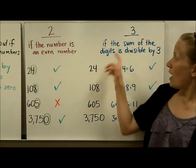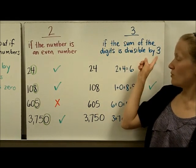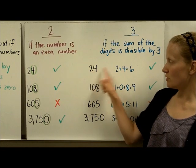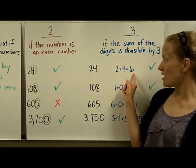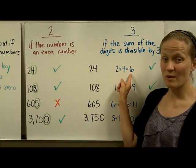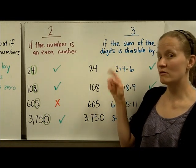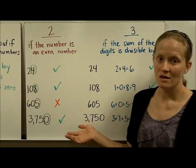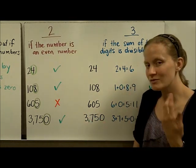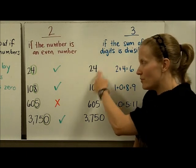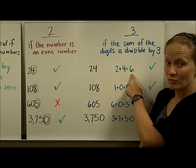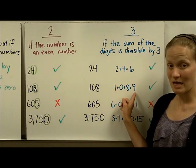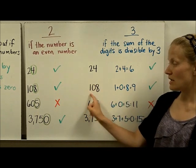3 is a little trickier. If the sum of the digits is divisible by 3, then the whole number is divisible by 3. You take the number and add the digits together. For 24, I add 2 plus 4 and get 6. Then I ask if 6 is a multiple of 3 — think 3, 6, 9, 12, 15, 18, 21, 24, 27, 30. Since 6 is a multiple of 3, the number 24 is divisible by 3. For the next number, the digits add up to 9, which is also a multiple of 3, so that number is divisible by 3.